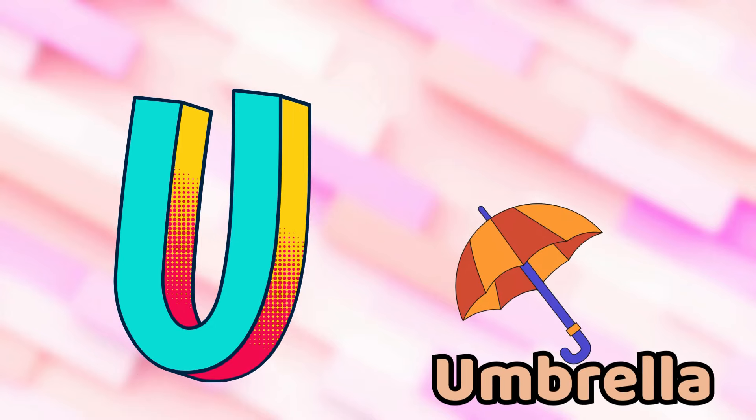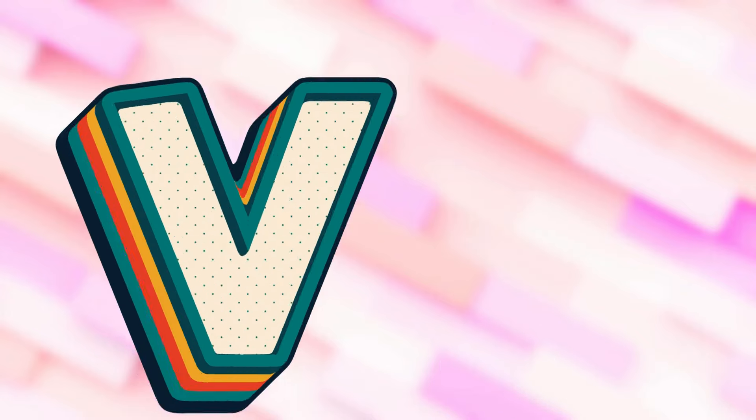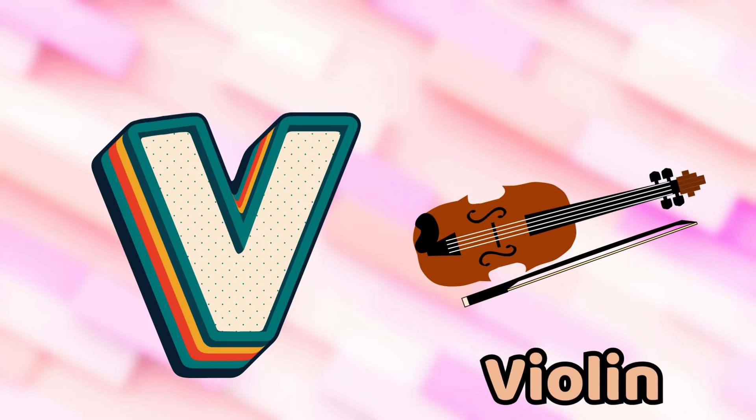U is for Umbrella. U, U, Umbrella. V is for Violin. V, V, Violin.